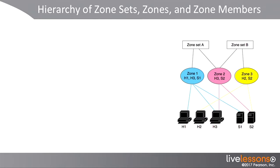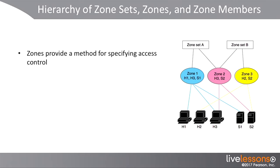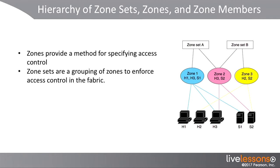To the right, we have a logical representation of what our storage area network might look like, where for instance Zone 1 has H1 and H3 connected as initiators and S1 connected as the target. So we can have multiple zones on our network, and the zones once again provide a method for specifying access and who gets what access to which storage devices.